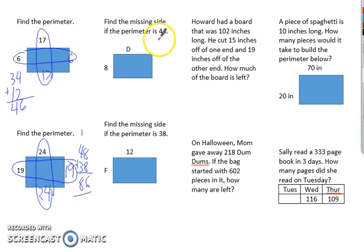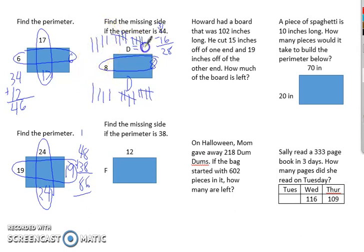Find the missing side if the perimeter is forty-four. Means this would be a D and this would be an eight. Eight plus eight is sixteen. Take that away from the forty-four. And I'm at twenty-eight, split up between D and this D. So counting from one through fourteen, my fault, fifteen through twenty-eight. So it equals fourteen.